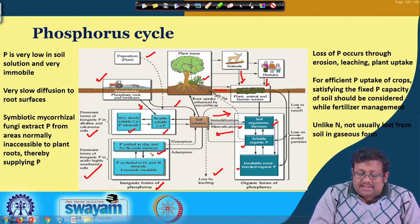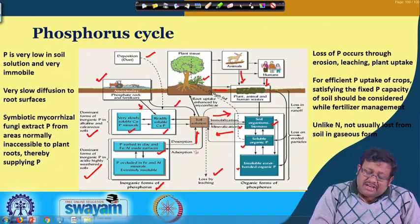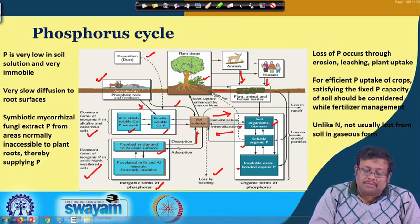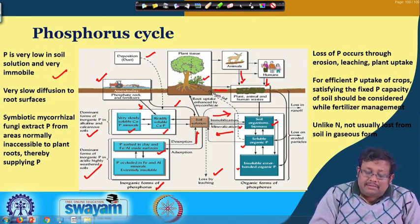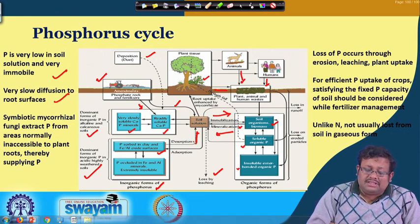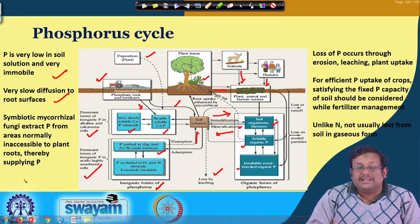From the phosphorus adsorbed on clay and iron oxides and aluminum oxides, some desorption occurs and that phosphorus goes to the soil solution. The opposite also happens: soil solution H₂PO₄⁻ gets adsorbed onto clay and iron-aluminum oxide surfaces and ultimately becomes inaccessible to plants, creating deficiency. Phosphorus is very low in the soil solution and very immobile, with very slow diffusion to root surfaces.